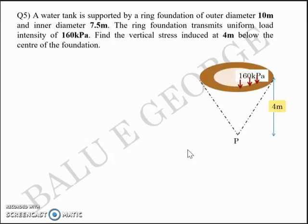You have the ring foundation. It looks like a doughnut with outer diameter 10m and inner diameter 7.5m. The dark brown color is the area on which the load of 160kPa is applied. You are asked to find the vertical stress intensity at point P, 4m below the center of the foundation. Basically you will have to find I_C × Q of the outer minus I_C × Q of the inner, marked as I_C outer and I_C inner, because the load is only acting upon the ring and not the entire circle.